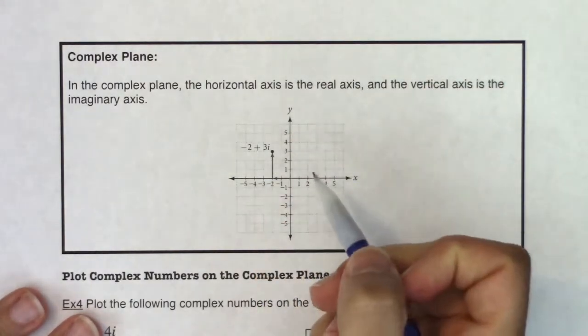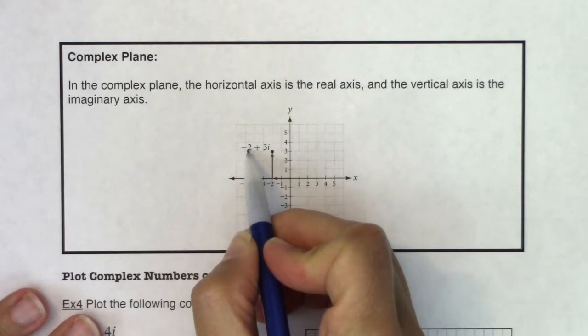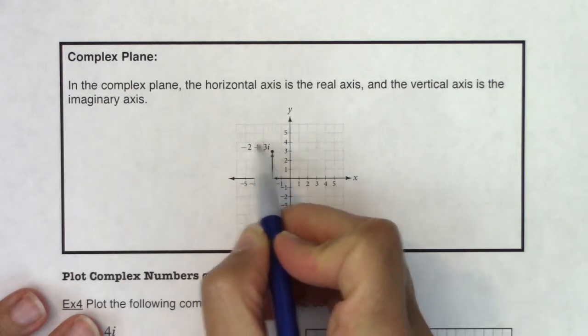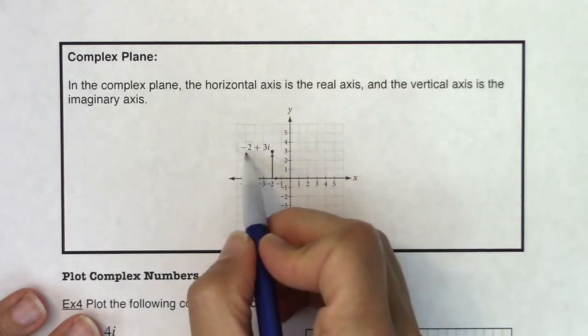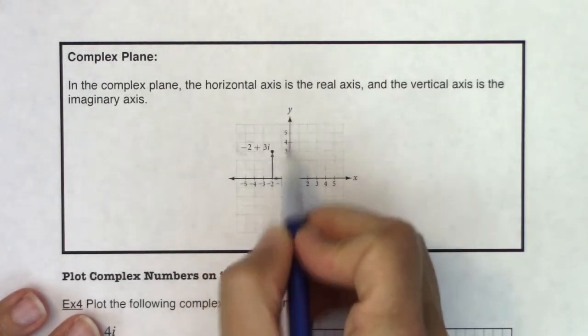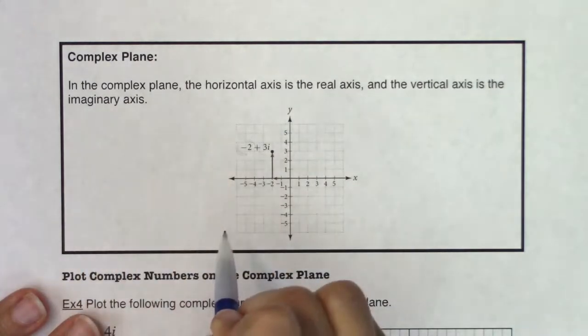So for example, if I ask you to plot the complex number negative 2 plus 3i, negative 2 is going to be on the real axis because that's the real number. 3i is going to be along the y-axis because that's the imaginary part.